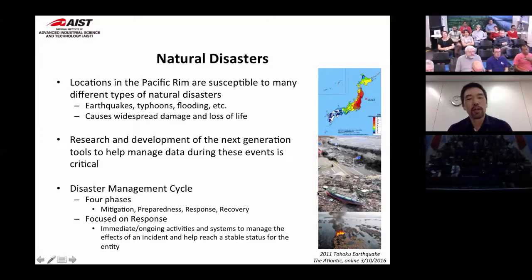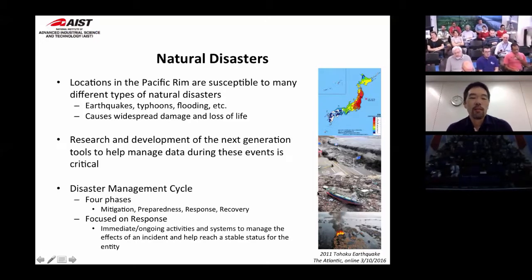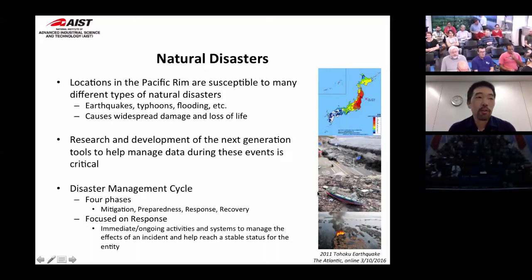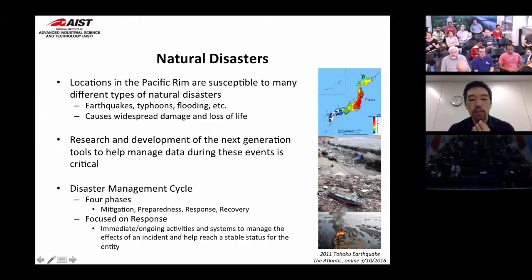Australia sits in the Pacific Rim along with Japan and California, and natural disasters are very common around the Pacific Rim. All countries along it are susceptible to many types — earthquakes, typhoons, flooding — causing widespread damage and loss of life. I probably don't need to remind most people about the 2011 earthquake in Japan. It was quite an epic event that caused a lot of damage, making natural disaster management a big topic in Japan over the last five or six years, which is why development of next generation tools to help manage data during these events is critical.